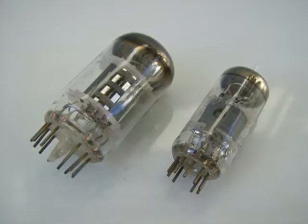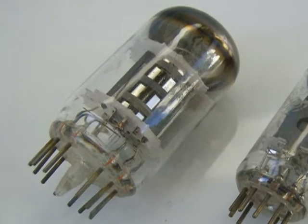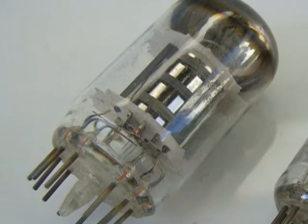Tubes were the main cause of breakdowns, and the most common failure was the weakening of the electron-emitting element, the cathode.